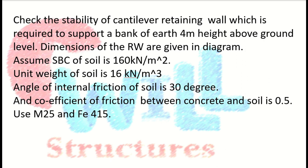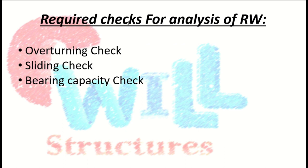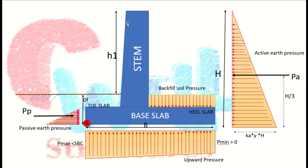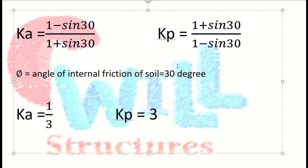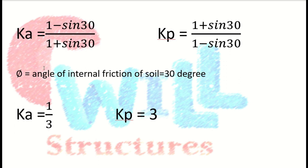We have to check the stability of the retaining wall. The stability checks are: overturning check, sliding check, and bearing capacity check. Before that, we draw the pressure diagrams — active earth pressure, upward soil pressure, passive earth pressure, and soil pressure due to the backfill. Now let's calculate the coefficient of active earth pressure Ka and coefficient of passive earth pressure Kp. At 30 degrees angle of internal friction, Ka = 1/3 and Kp = 3.